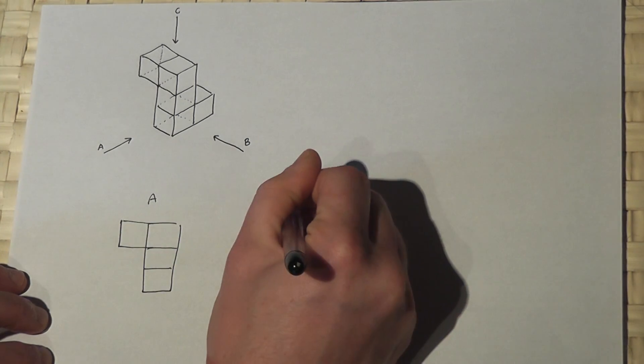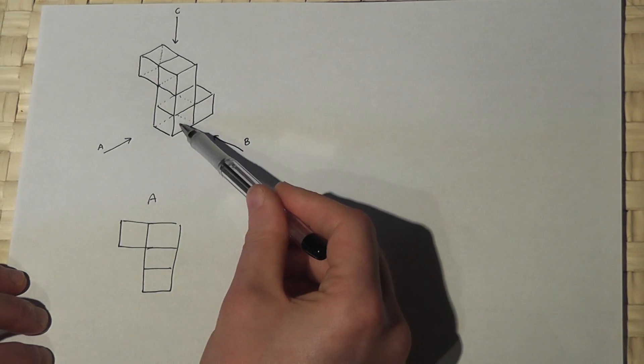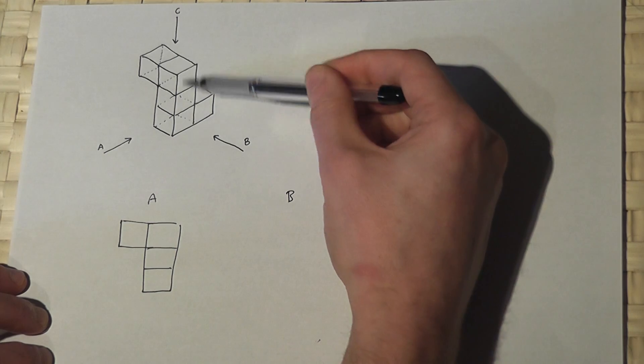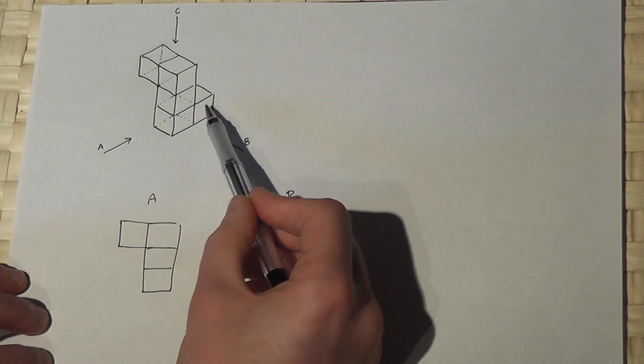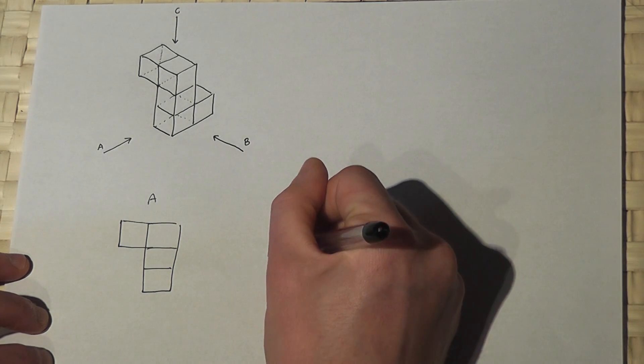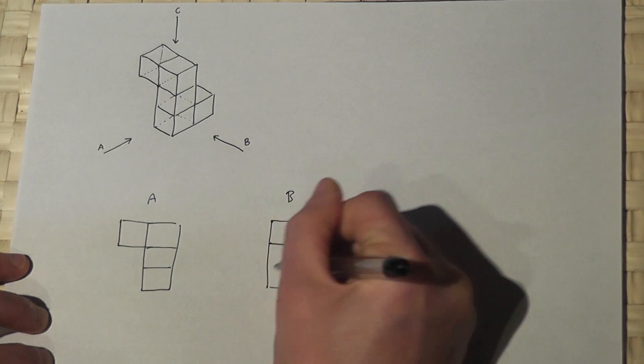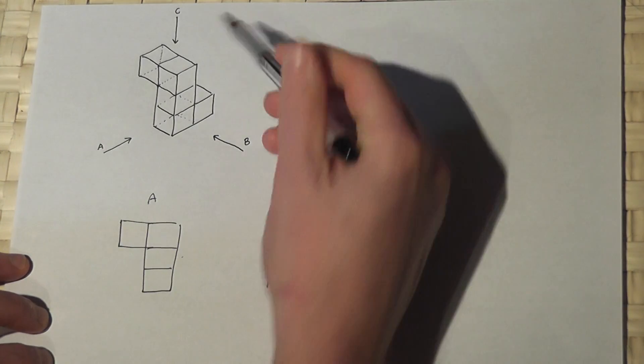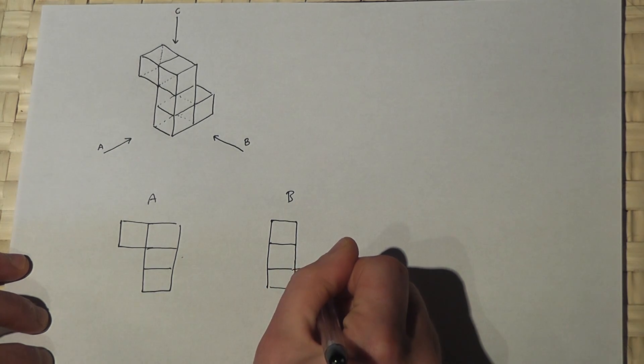Now then from viewpoint B, from this angle you would see the base and the height of the L, so in fact you see an orthodox L - the base and the height. So it would be three high as it was from A - one, two, three - with the one to the right there. And there we have our L shape.